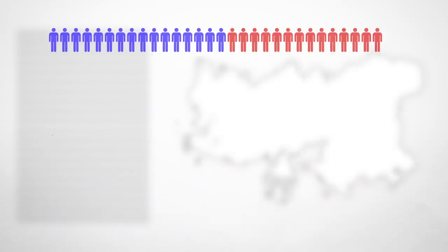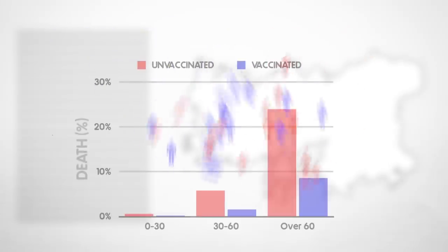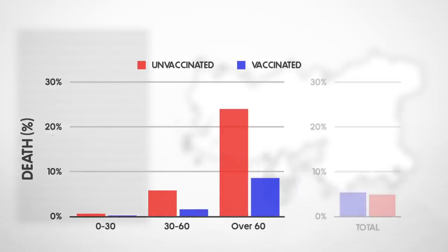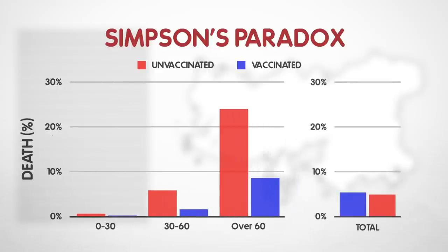However, a statistician put these deaths into three different age groups and found the opposite trend. Within each group, those vaccinated were far less likely to die from the disease. This apparent contradiction is known as Simpson's paradox, where the aggregate of all the data shows a trend that is opposite to that when broken down into groups.